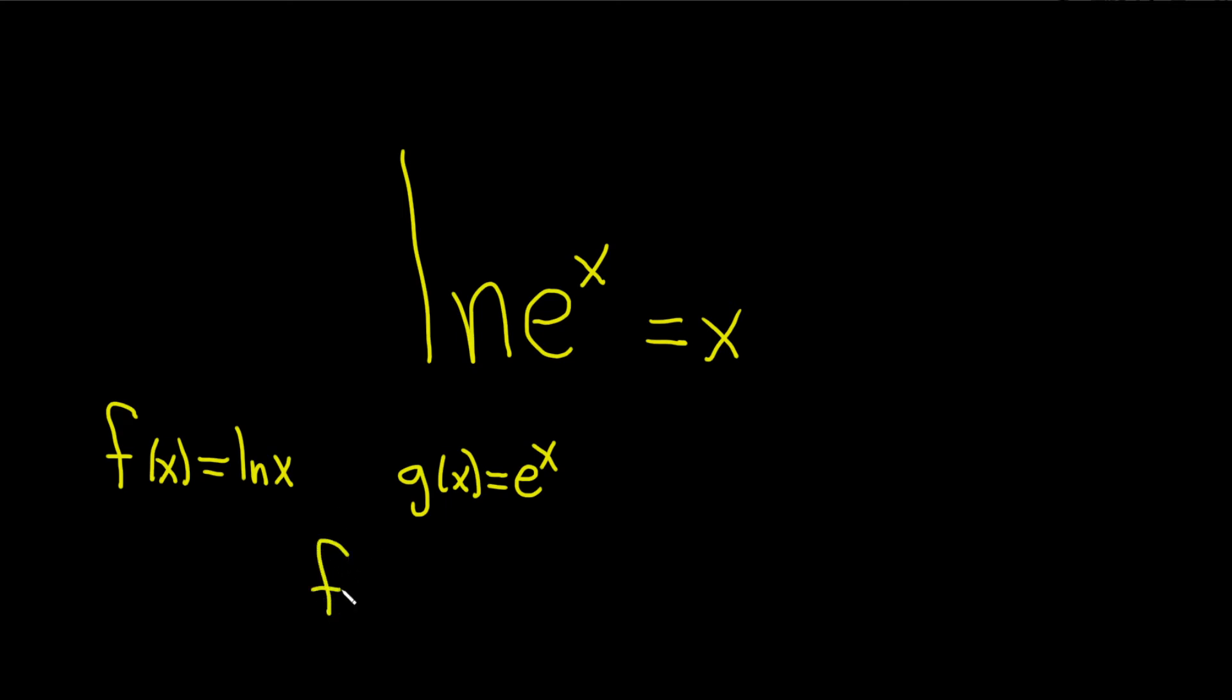So in other words, if you look at f of g of x, well g does something to x and f undoes it because it's the inverse function. So it's kind of like they cancel, so you just get x.